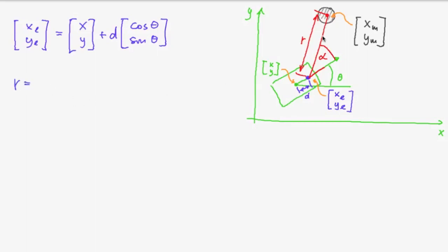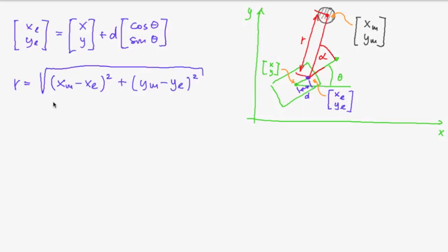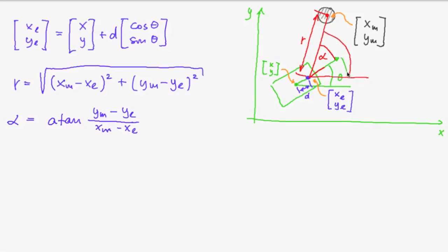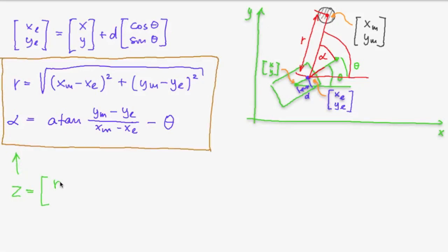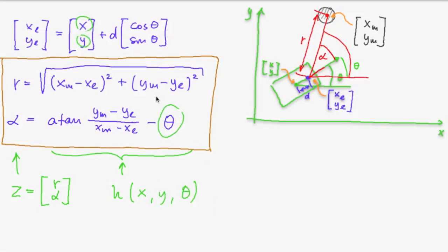The distance r is given by the square root of (xm minus xl) squared plus (ym minus yl) squared. The angle alpha is the arctangent of (ym minus yl) divided by (xm minus xl), minus theta. This is our measurement vector c consisting of r and alpha, and our function h depends on position x, y, and theta. The landmark coordinates xm and ym become constants in h since the map is fixed.